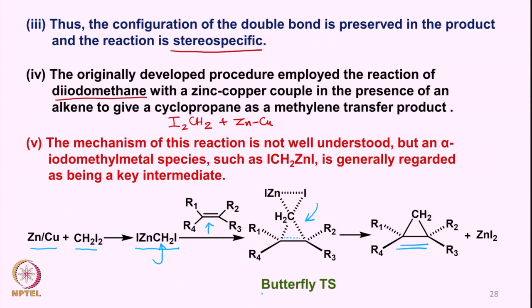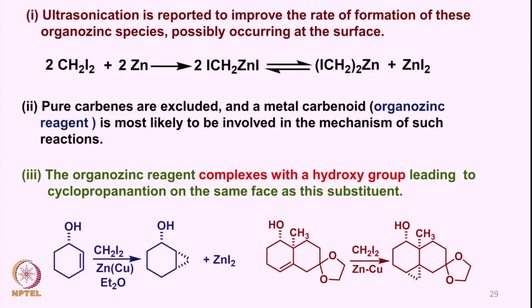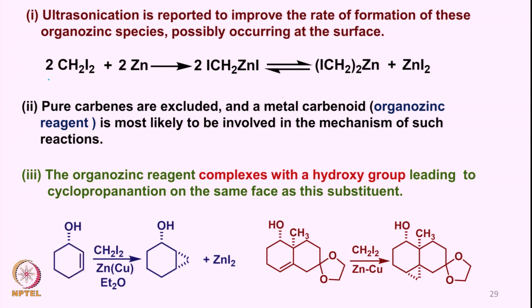This is termed the butterfly transition state because it looks like a butterfly. Ultrasonication is known to improve formation of these organozinc species, causing the reaction to occur faster, suggesting that the reaction occurs at the zinc surface. When diiodomethane reacts with zinc, it forms a carbenoid species in equilibrium with another species and zinc iodide. Free carbenes are excluded; a metal carbenoid or organozinc reagent is the likely mechanistic species.